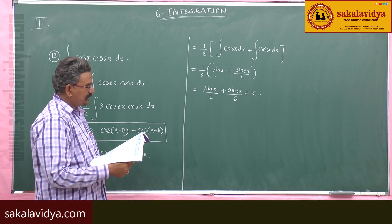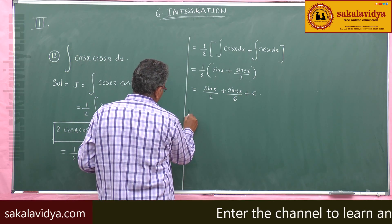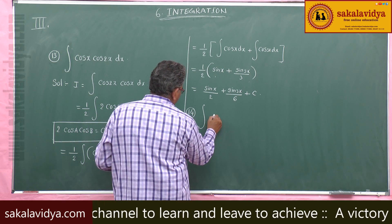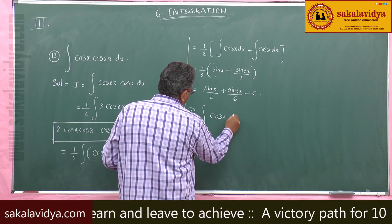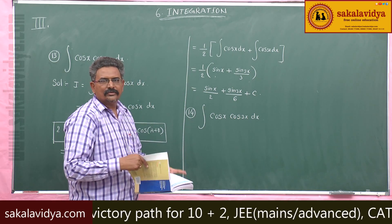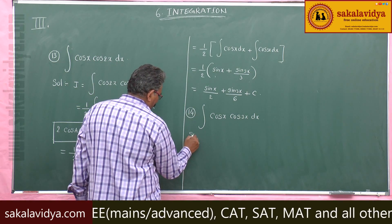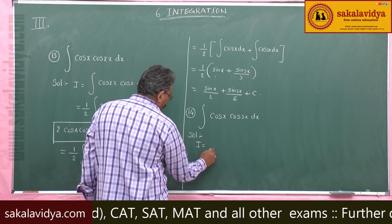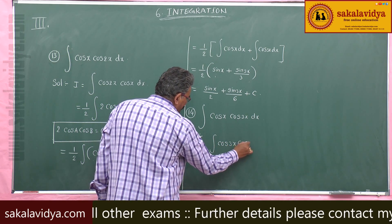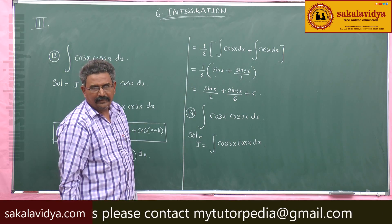Now let us move to the fourteenth problem: Evaluate integral of cos x · cos 3x dx. I is equal to integral of cos 3x · cos x dx. Multiply by 2 and divide by 2.